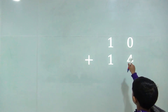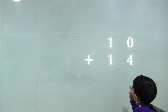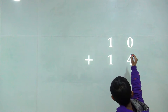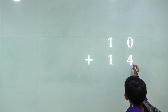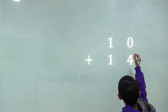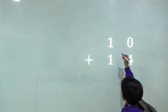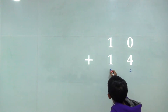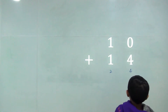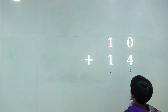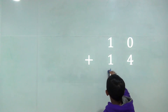Two digit number plus two digit number. Zero plus four is equal four and one plus one is equal two. So the answer would be twenty-four.